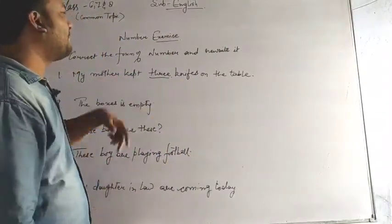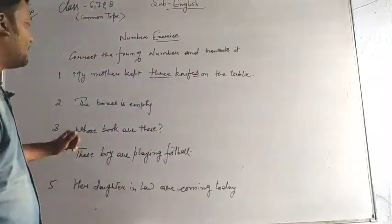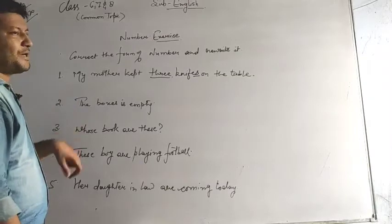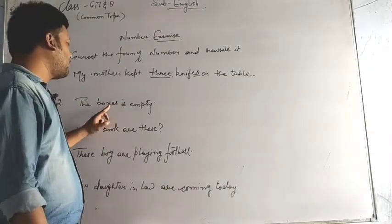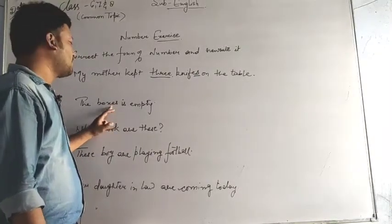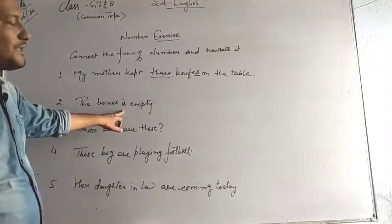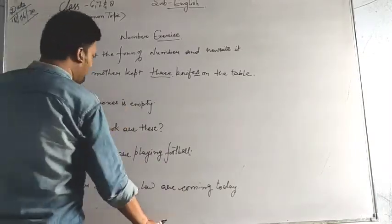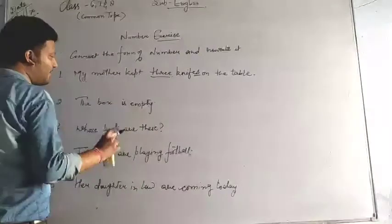The boxes is empty. Now if I see boxes and is - boxes is plural, it is ending with X, I put E-S, it becomes plural of box. And 'is' is there. 'Is' I use always for the singular things, but now 'is' is there, so I will make my noun singular and not plural.